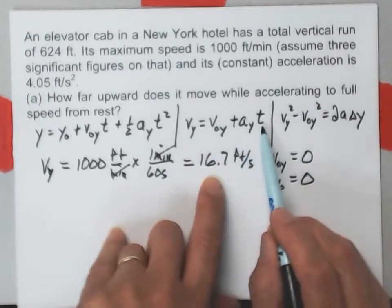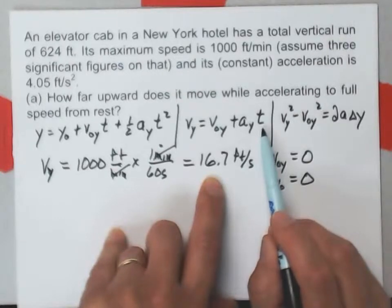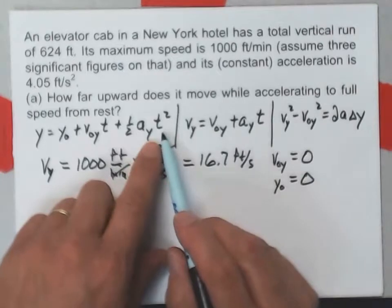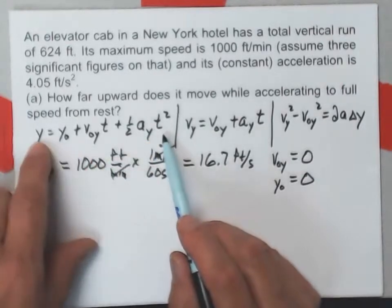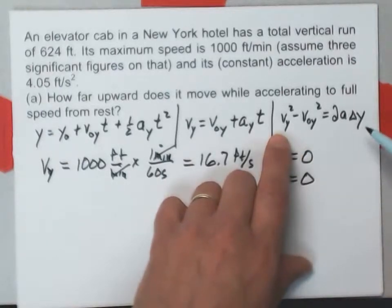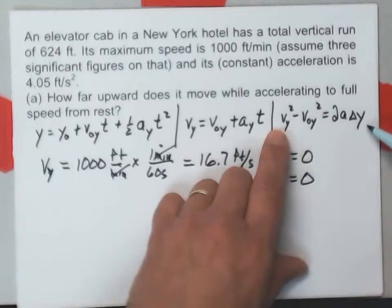I could solve for time and then plug it into the position equation. But I don't have to do that intermediate step of solving for time. I can use this equation here. V naught y is 0, delta y is what I'm after, so I'm just going to use this equation.